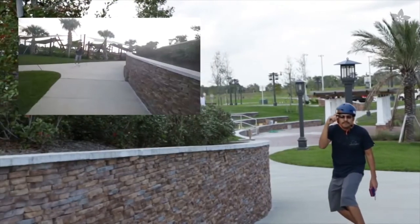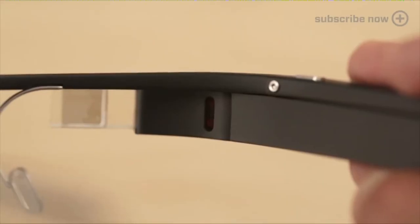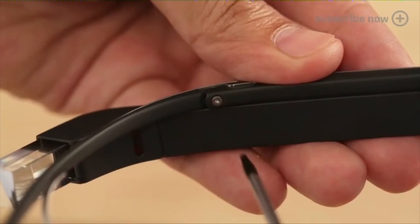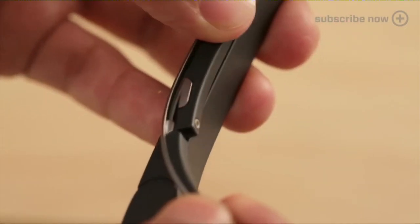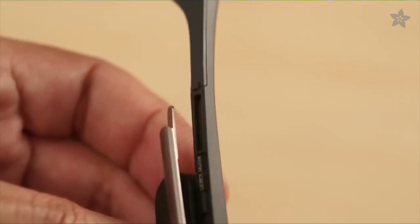3D printing a plastic adapter turns any frame into prescription Google glasses. Using a T5 screwdriver, we can easily detach the frames from glass. Just remove this one screw next to the eye sensor. Lightly pull out the right temple and slide out the frame.